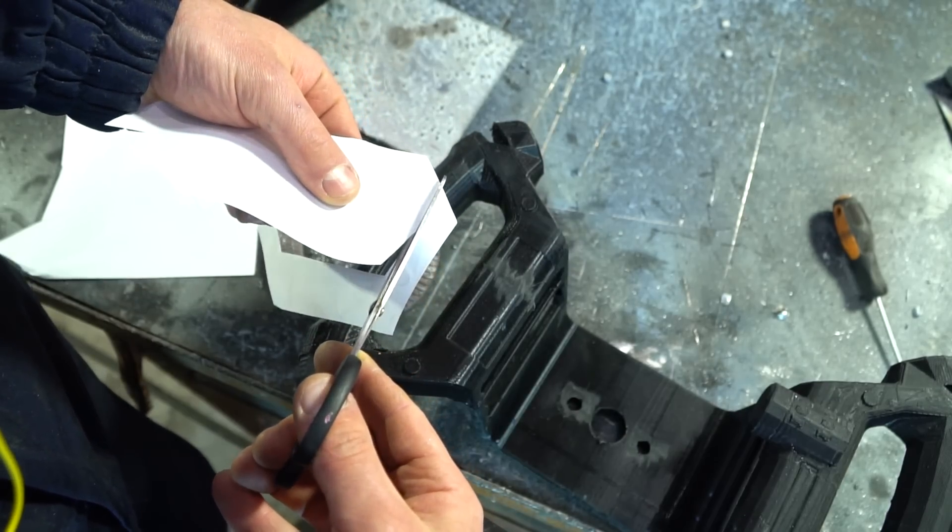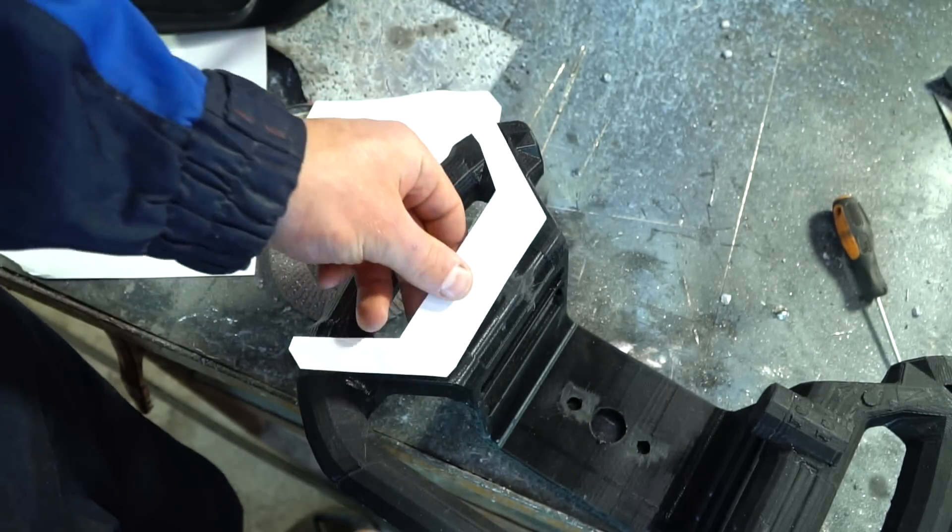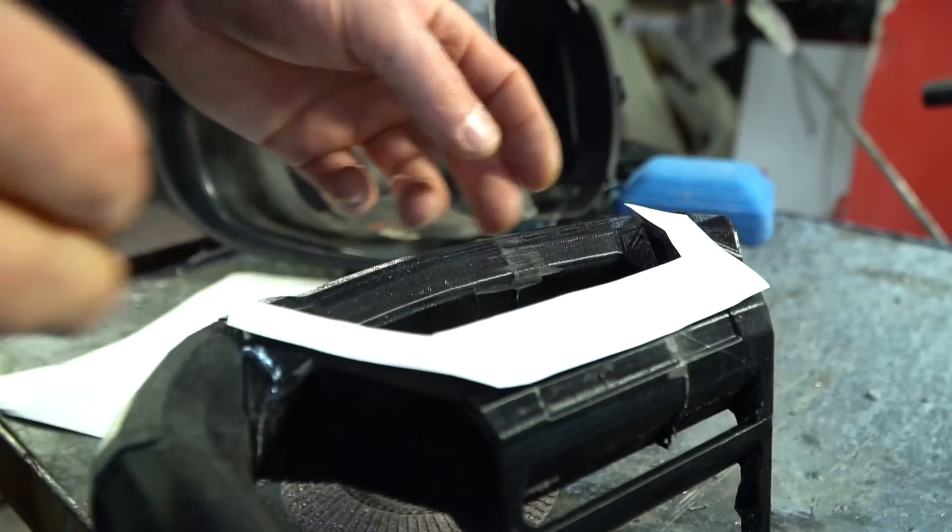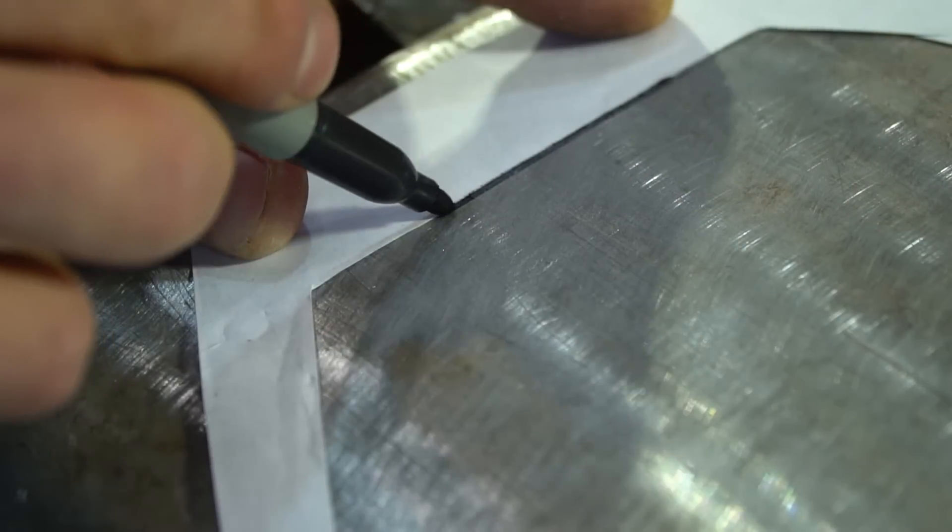The rest of the aluminum details will be made with the help of paper templates. Next comes the aluminum part of the handles, which I want to make hollow to accommodate some electronics and buttons.